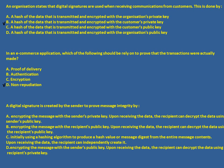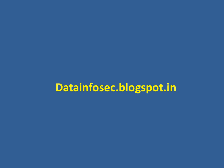A digital signature is created by the sender to prove message integrity. As we discussed, it is created in two steps: first, a hash of the message is created; second, that hash is encrypted. Options suggesting encryption of the message itself are incorrect — in digital signature, first the hash is created and then that hash is encrypted. Thanks for watching.